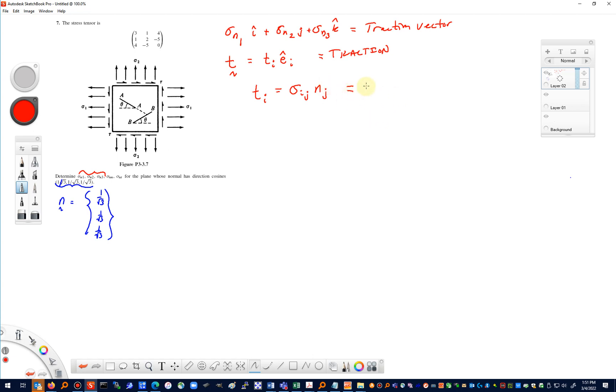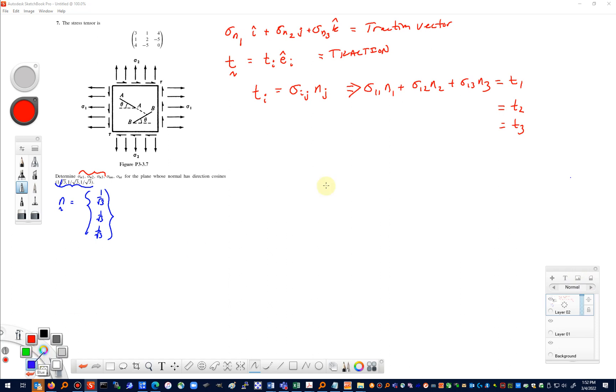This would be σ_11 n_1 plus σ_12 n_2 plus σ_13 n_3, and that would be for the t_1 component. Then I could do the same sort of thing and get that equation for t_2 and t_3. As we mentioned, our book likes to use the symbol that's a little bit different, so they would call this σ_n1, σ_n2, and σ_n3. That saves you a little bit of time, but there's even a more efficient way to think about this.